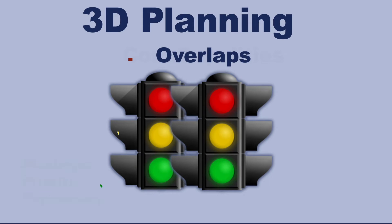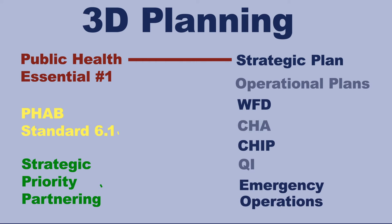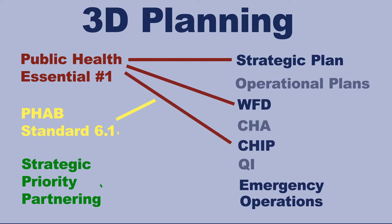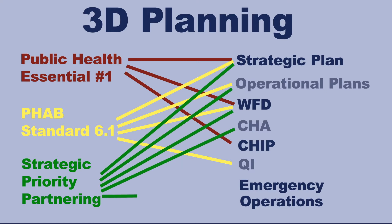3D planning allows you to look for commonalities, gaps, and overlaps across all the plans and documents in the Dashboard. For example: which pieces of which plans support the 12 essentials of public health and accreditation? Which plan elements are related to FAB Standard 6.1? Which pieces of the plans support the strategic priority of partnering from your strategic plan? And which documents will you submit for each FAB standard and measure? 3D planning is a great way to identify commonalities, gaps, and overlaps across all the different plans in the department.